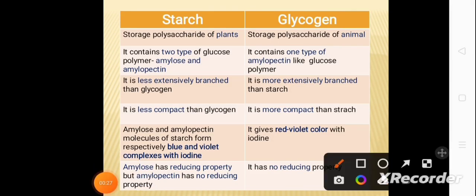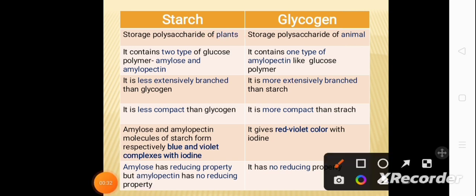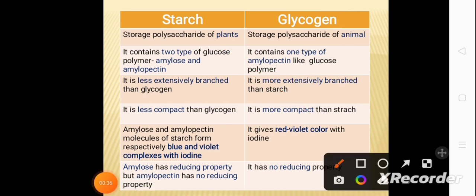First of all, starch is the storage polysaccharide of plants, whereas glycogen is the storage polysaccharide of animals.